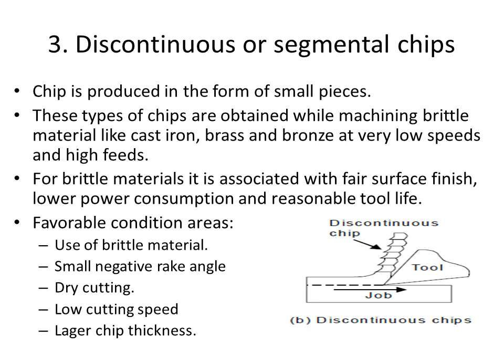Discontinuous or segmental chips are the third type. In this case, the chip breaks into small segments. These types of chips are obtained while machining brittle materials like cast iron, brass, and bronze, and also at very low or very high cutting speeds.